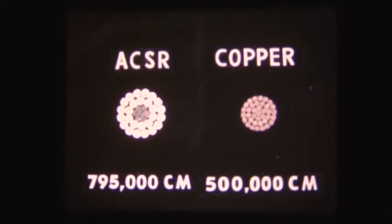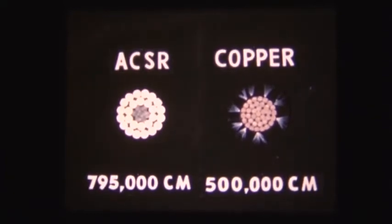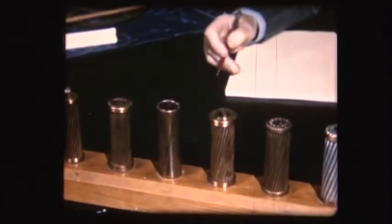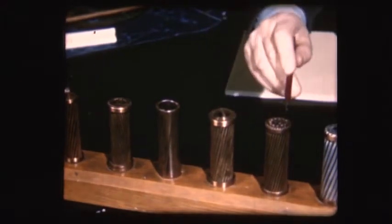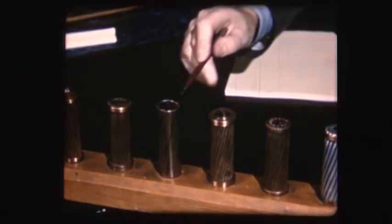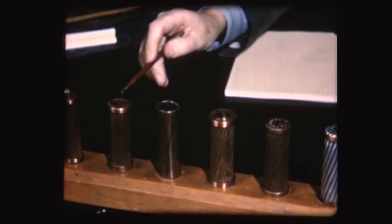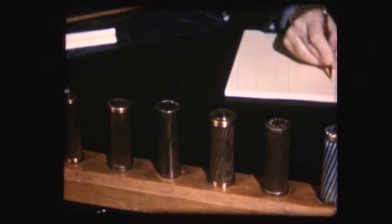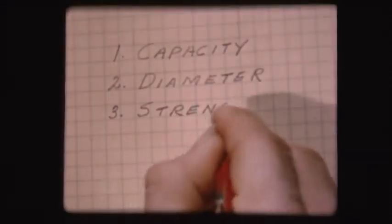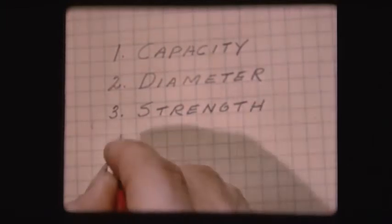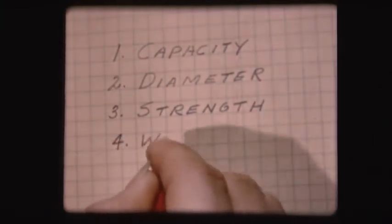The greater size of the ACSR gives it one advantage. There is less power loss due to corona, a discharge into the air that occurs at high voltage. To meet the corona problem with copper, expanded conductors have been designed. In making a choice of conductor materials, several properties, in addition to capacity and diameter, must be taken into consideration.